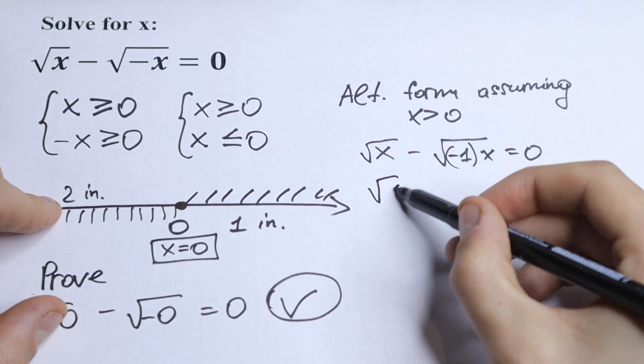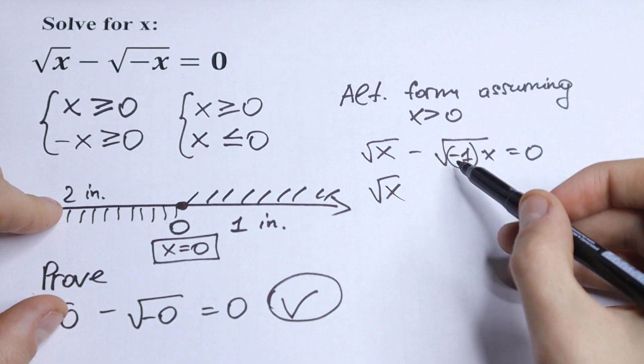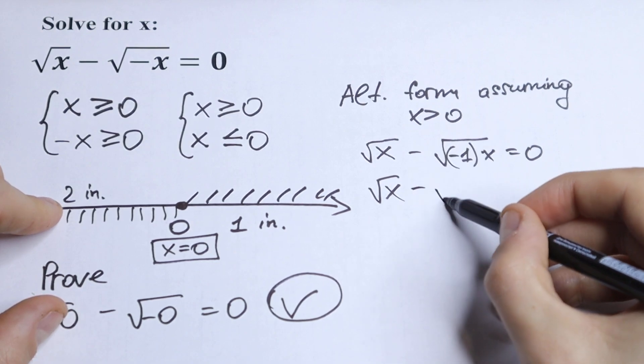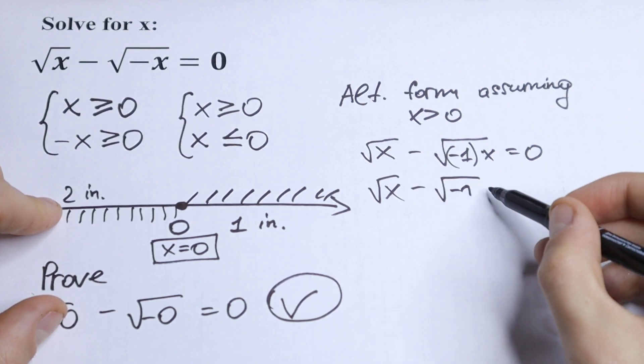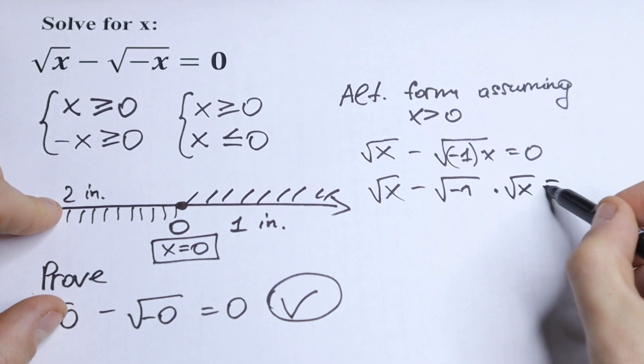This write in the same way square root of x and this can be written as square root of minus 1 times square root of x equal to 0.